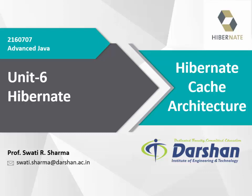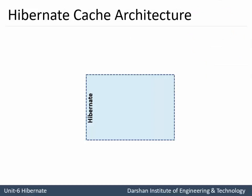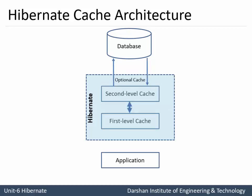First of all, the block diagram of Hibernate cache architecture. This cache architecture resides between the database and your application. As shown in this diagram, our application is connected with the Hibernate first level cache. The usage of cache is to reduce the number of database interactions, and the motive of using Hibernate cache architecture is performance improvement.